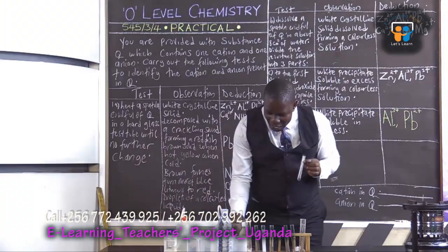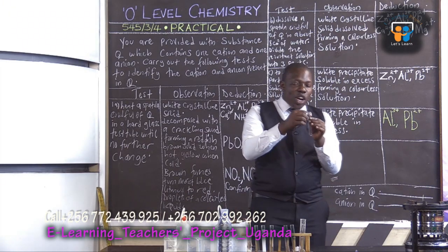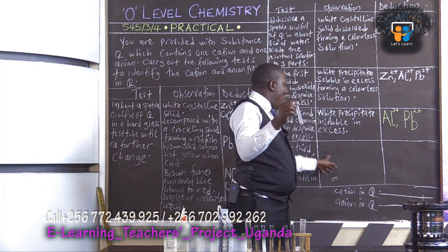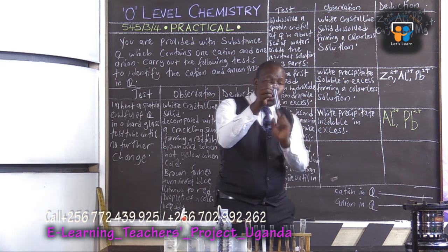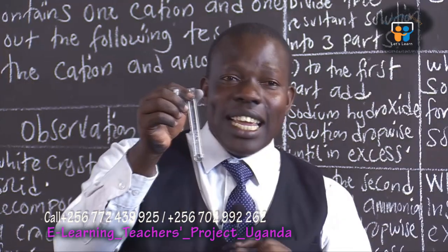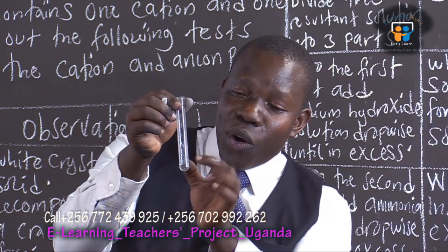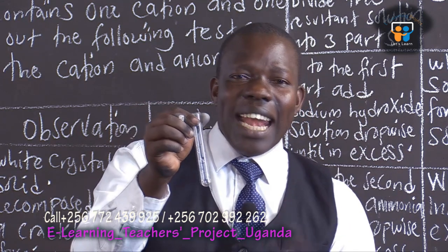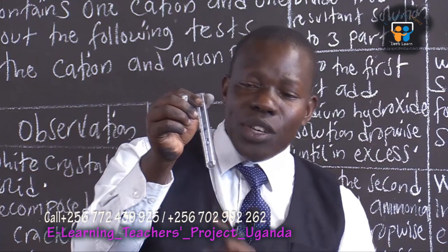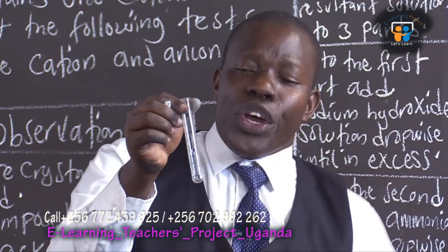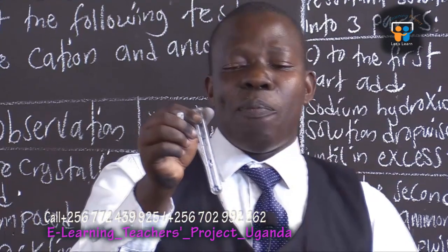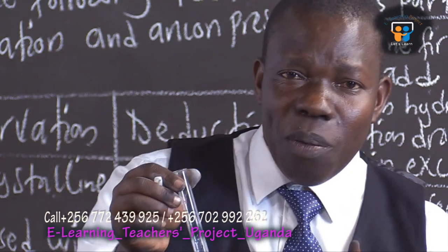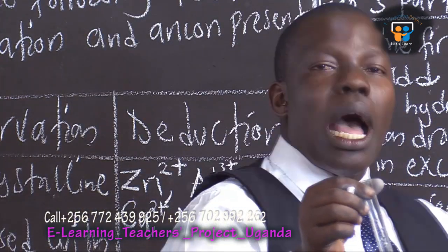Now, to give you a hint about what we actually expect: should we add potassium iodide and our solution remains colorless — like the one you're seeing inside the test tube — we shall confirm aluminium.